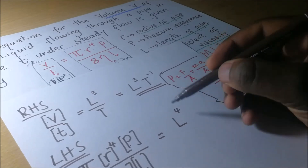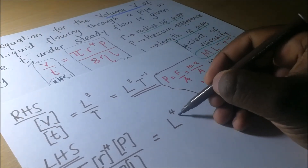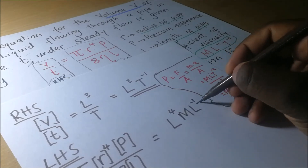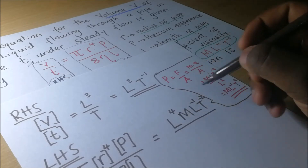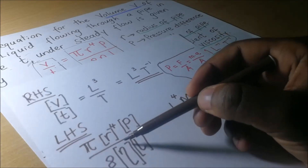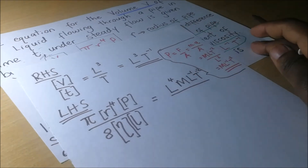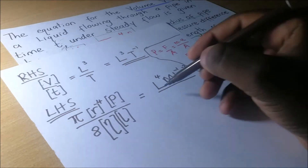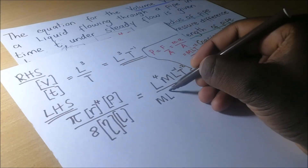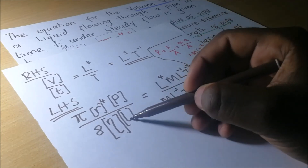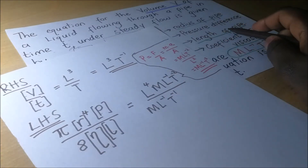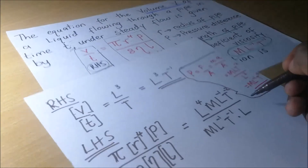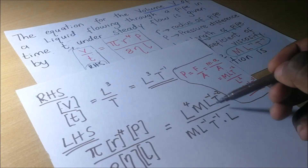The dimensions for pressure are M L to the power negative 1 T to the power negative 2. Divide that by the dimensions of the coefficient of viscosity, which according to our question was given to us as M L to the power negative 1 T to the power negative 1. So this is going to become M L to the power negative 1 T to the power negative 1 times the dimensions of L, which is the length of the pipe, times L. From there, we are going to go ahead and simplify this.